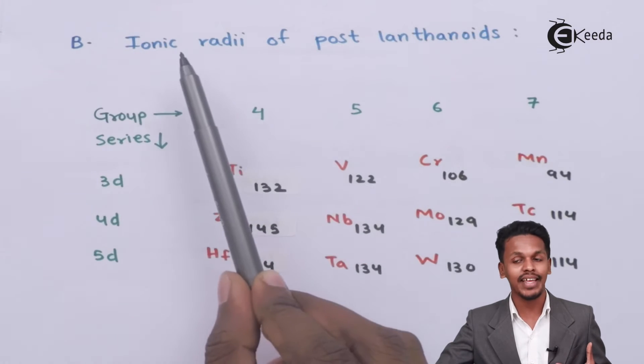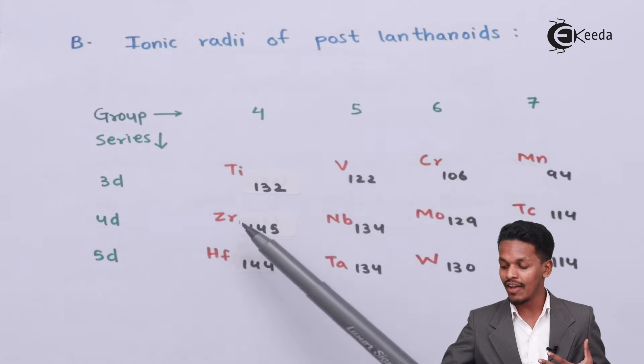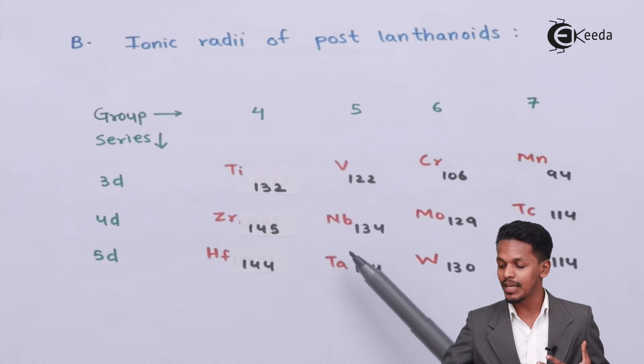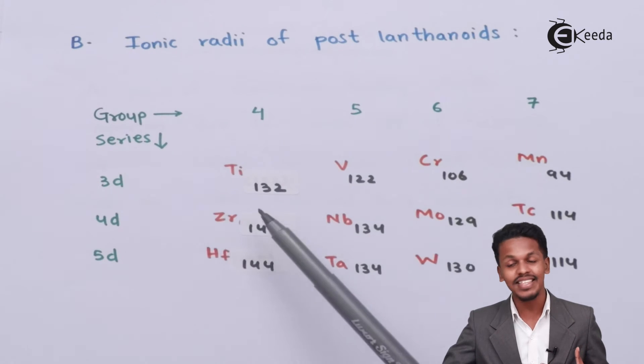Zirconium and hafnium have almost the same size. Niobium and tantalum also have the same size. Molybdenum and tungsten, as well as technetium and rhenium, all have almost the same size.